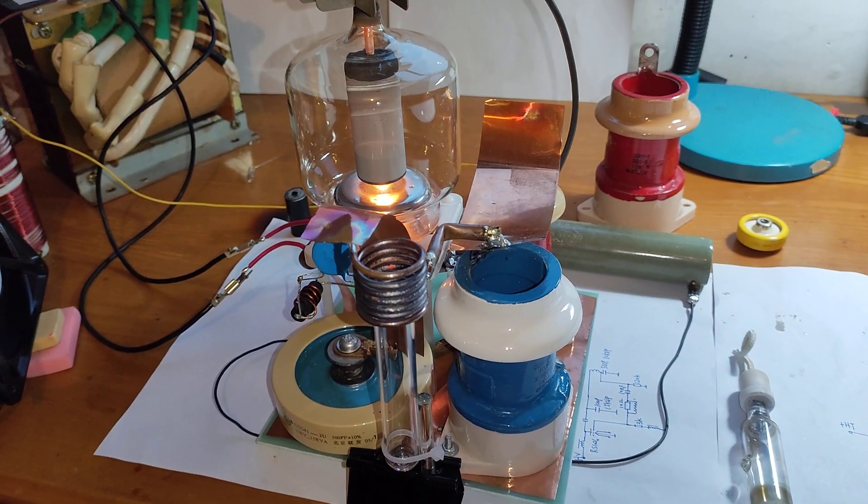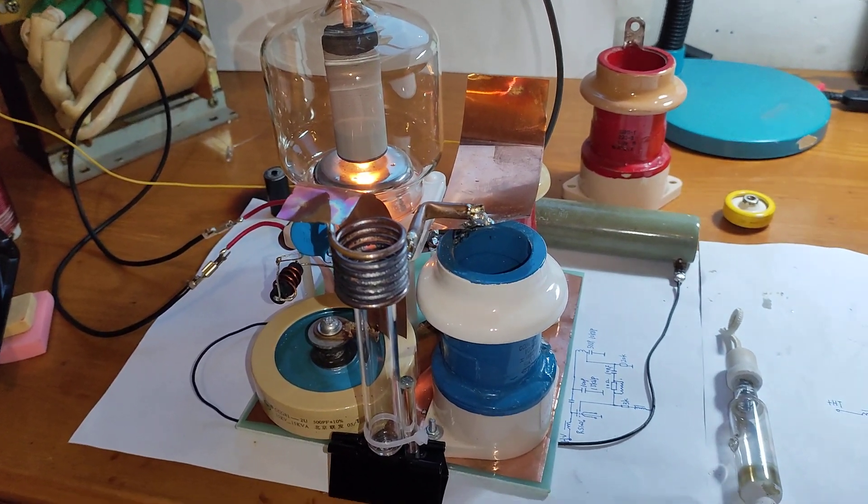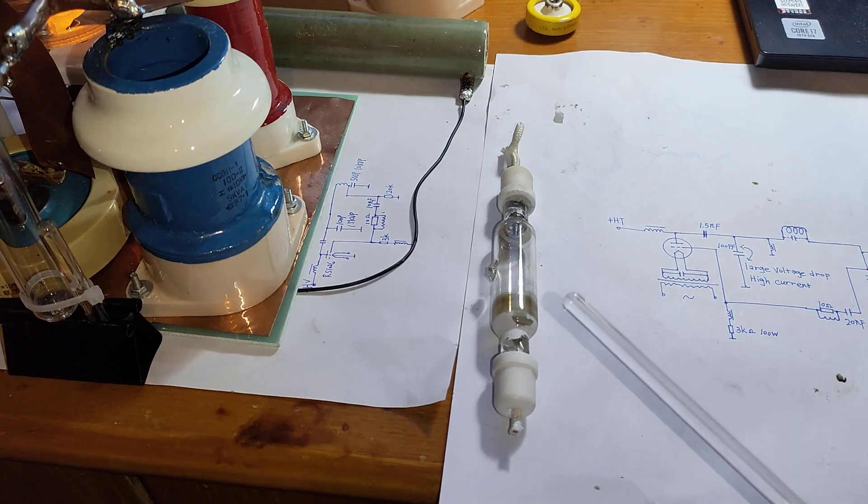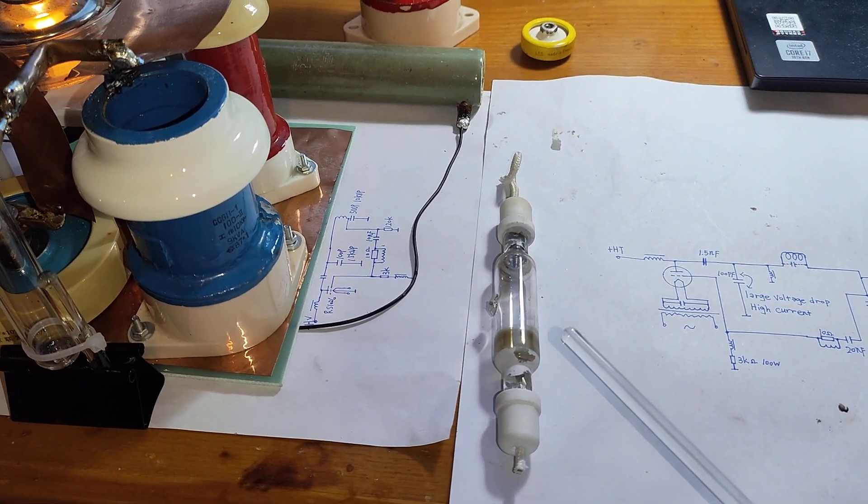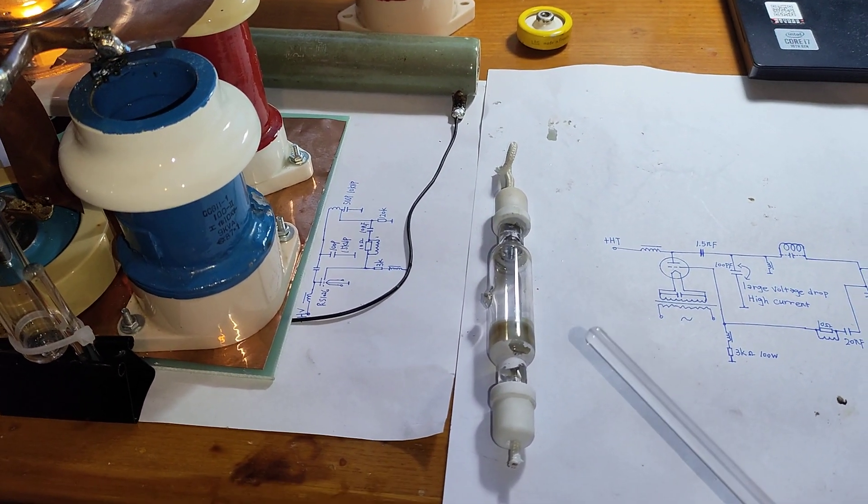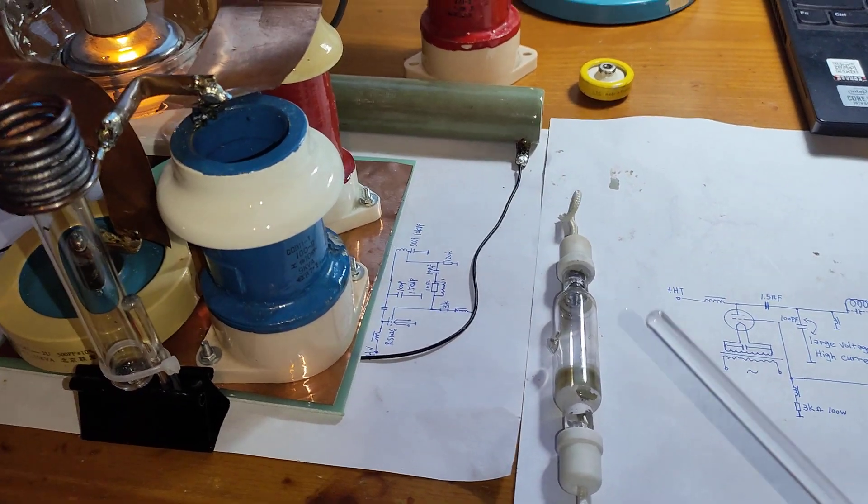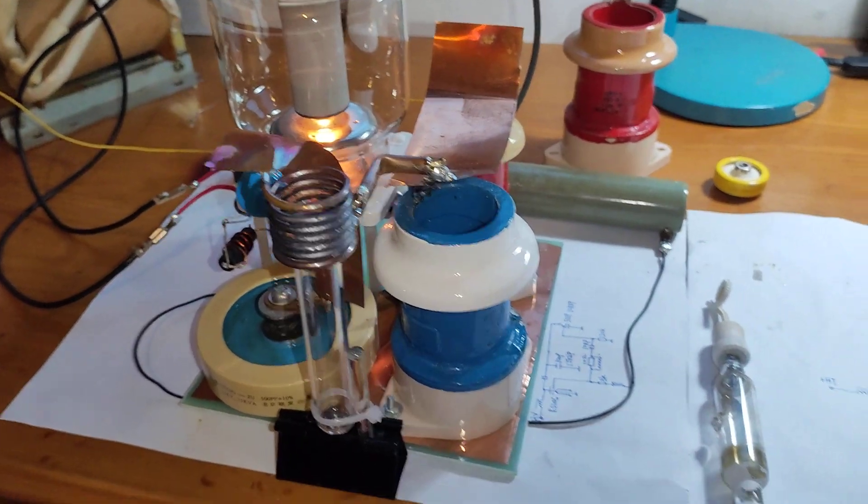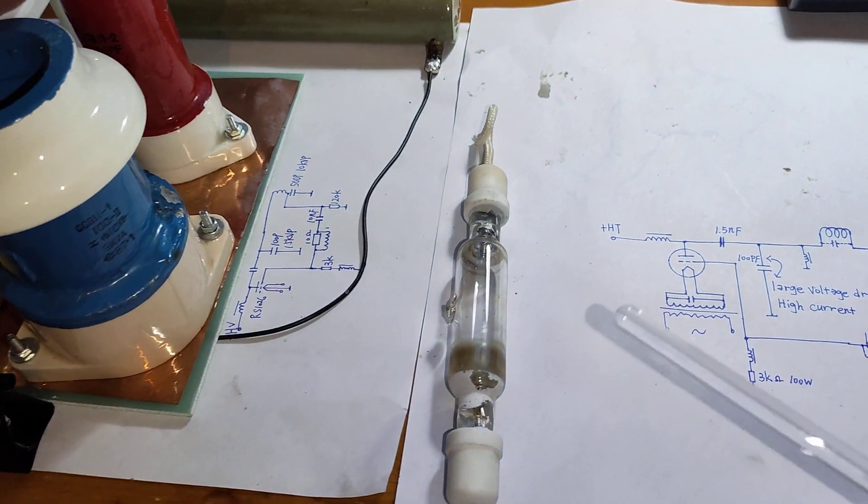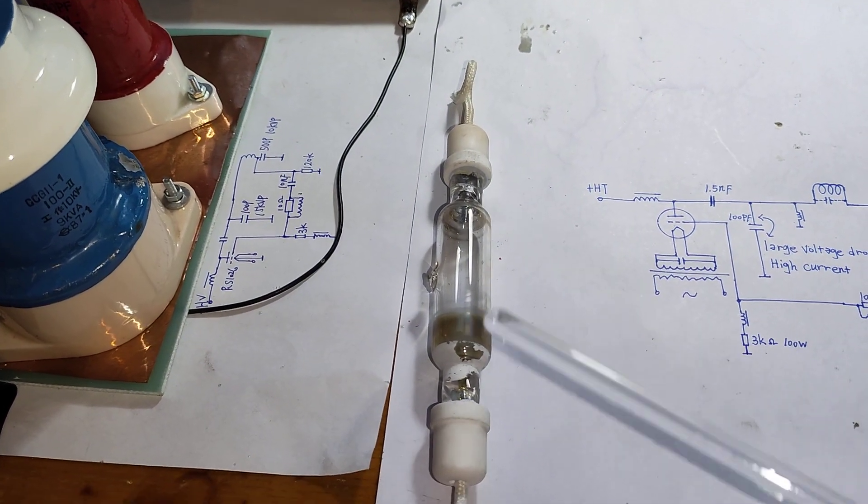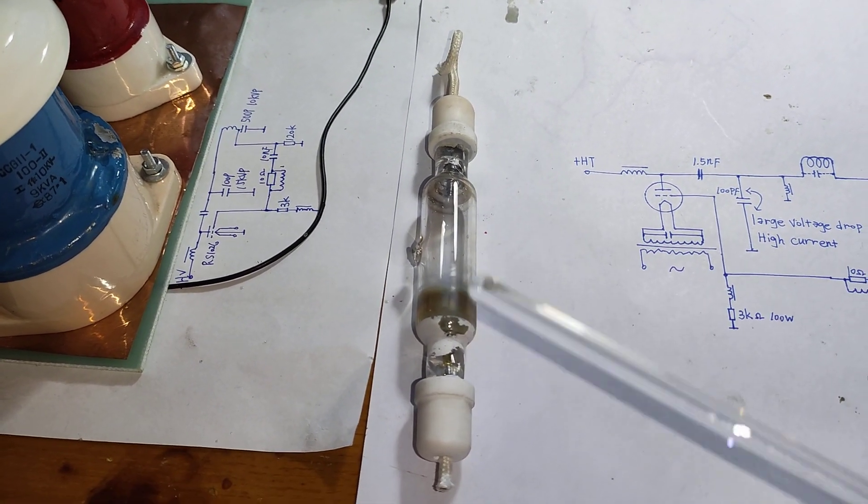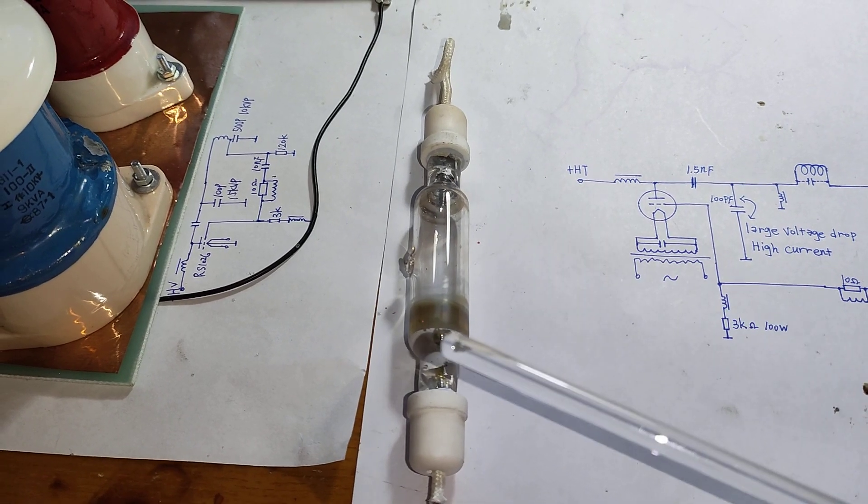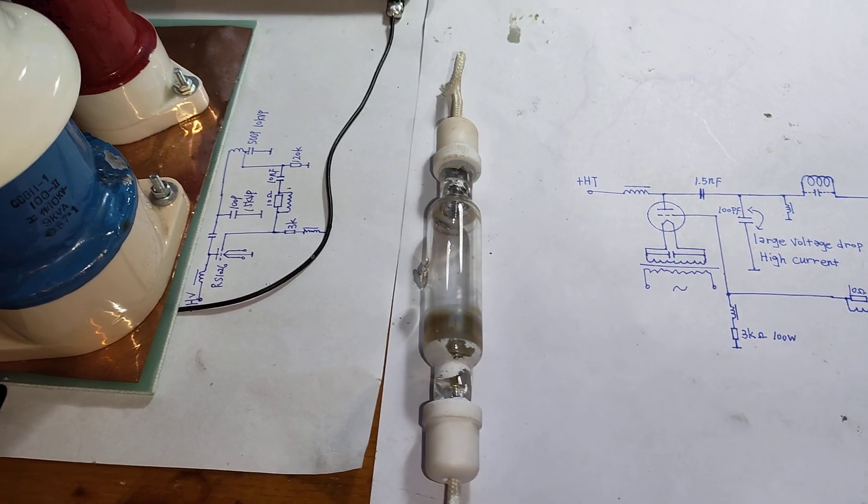But in that video I was using this quartz tube gas discharge lamp as the arc lamp or the arc tube inside this induction coil. And as you can see here and here are two tungsten electrodes which may interfere with the plasma inside.